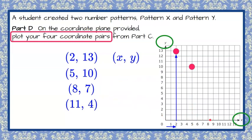In the second one, we're going to the right to 5 and then up to 10. Here, we're going to the right to 8 and up 7. And the last one, to the right, 11 and up 4. And there are your four ordered pairs plotted on the coordinate plane.